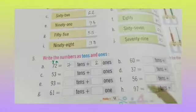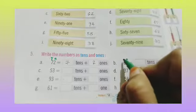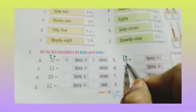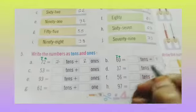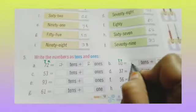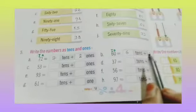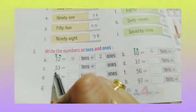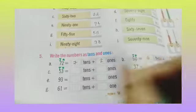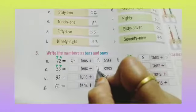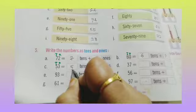Part B: 60. So ones and tens — 0 at the ones place and 6 at the tens place. So 60 equals 6 tens plus 0 ones. Now 53 — 3 at the ones place and 5 at the tens place. So 5 tens plus 3 ones.